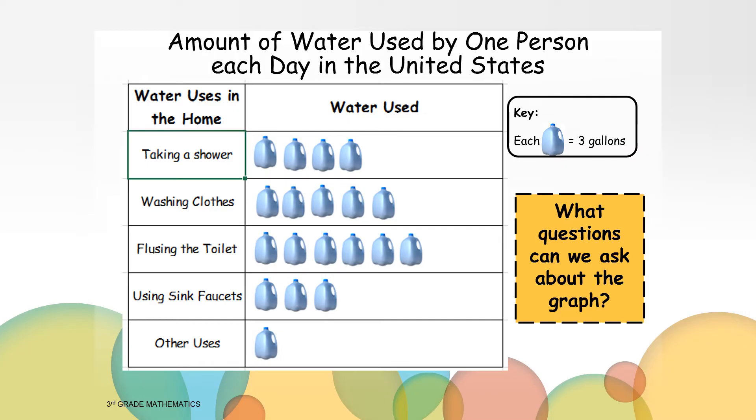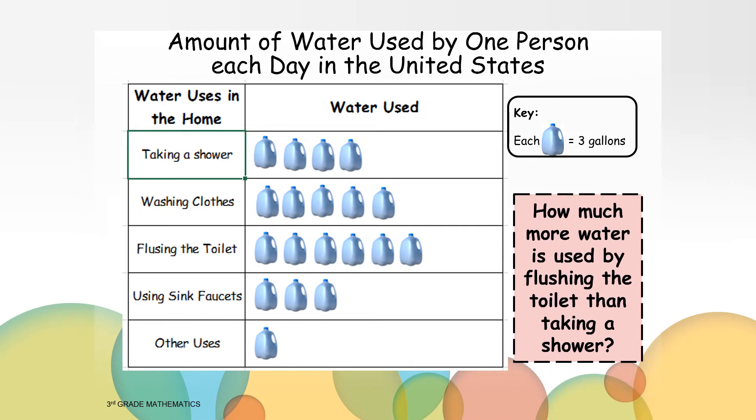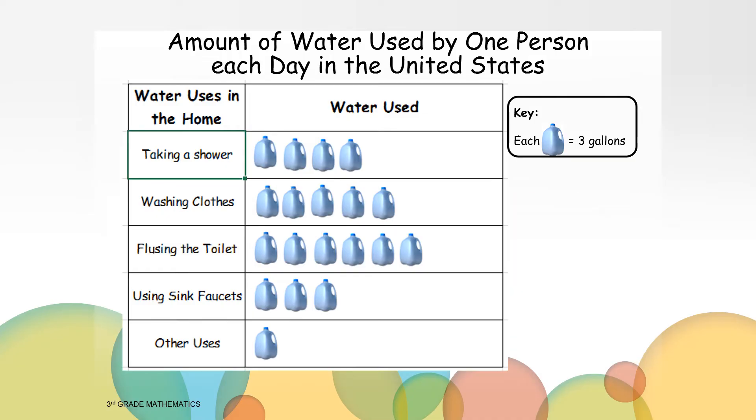Some questions we could ask are which activity uses the most water? Or how about which activity uses the least water? We could even ask how much more water is used by flushing the toilet than taking a shower. Now that we have created our pictograph and interpreted the data, let's use the same data to create a bar graph. Make sure you have your paper and pencils or crayons available.